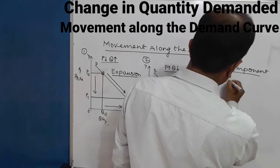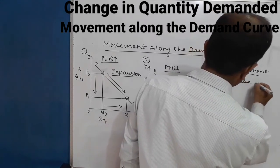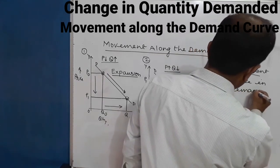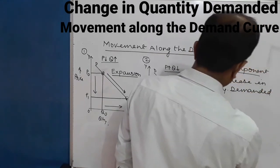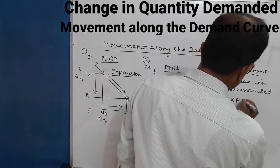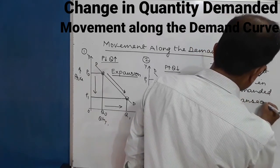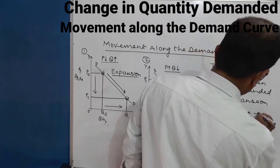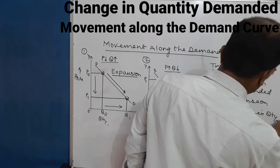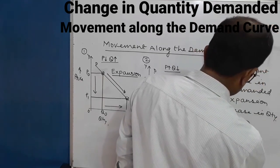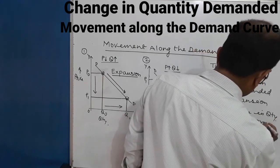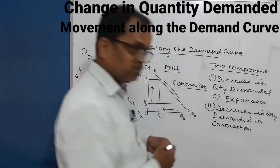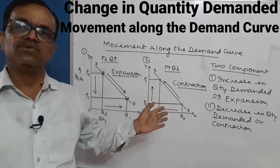There are two components of change in quantity demanded. Number one: increase in quantity demanded — also called expansion or extension of demand. Number two: decrease in quantity demanded — also called contraction of demand. Expansion and contraction — these are the two components of change in quantity demanded.